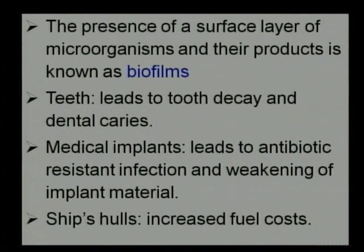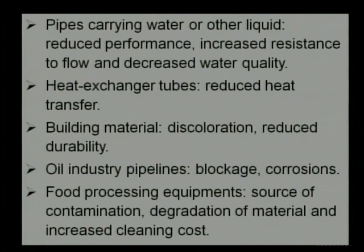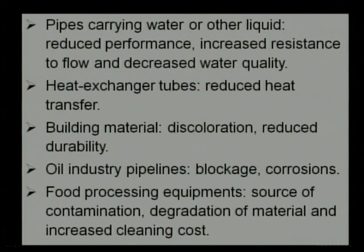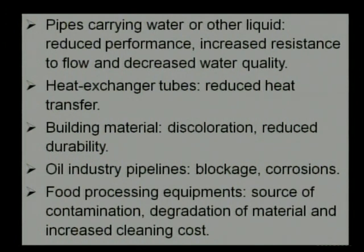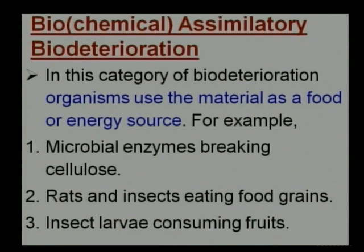The presence of organisms on certain materials forms what we commonly call biofilms. Biofilms are naturally found on teeth, on medical implants, and on ship hulls — all considered examples of aesthetic bio-deterioration. Other examples include the presence of organisms on building materials, organisms in pipes that reduce flow, organisms on heat exchanger tubes that reduce heat transfer, and organisms in oil pipelines that may block or corrode them and disturb flow.